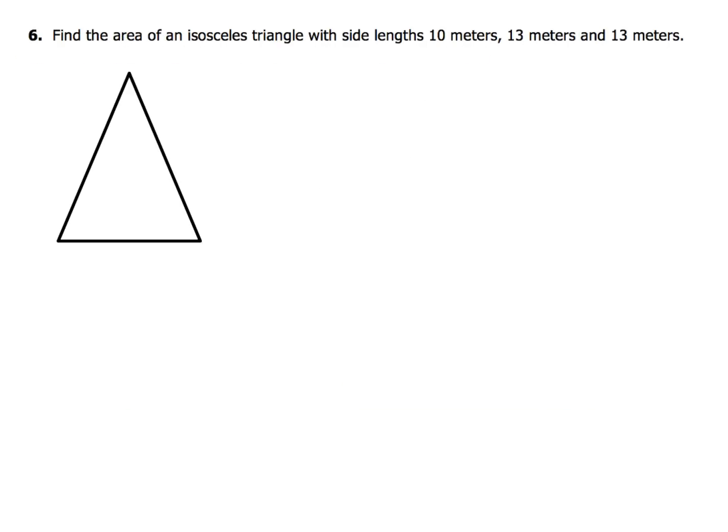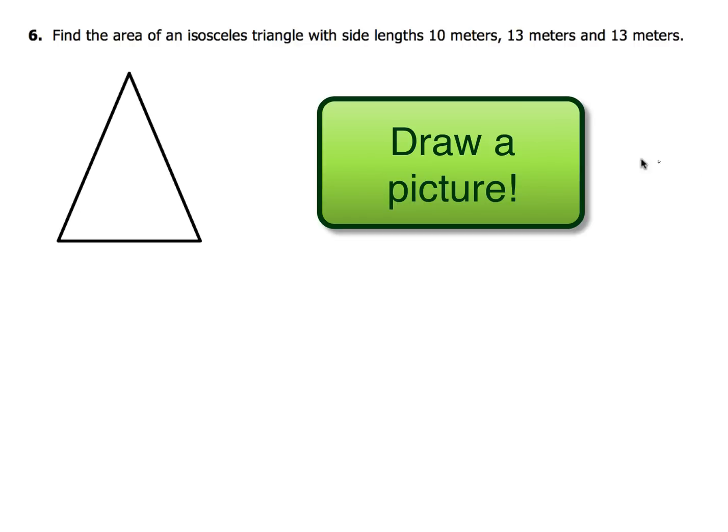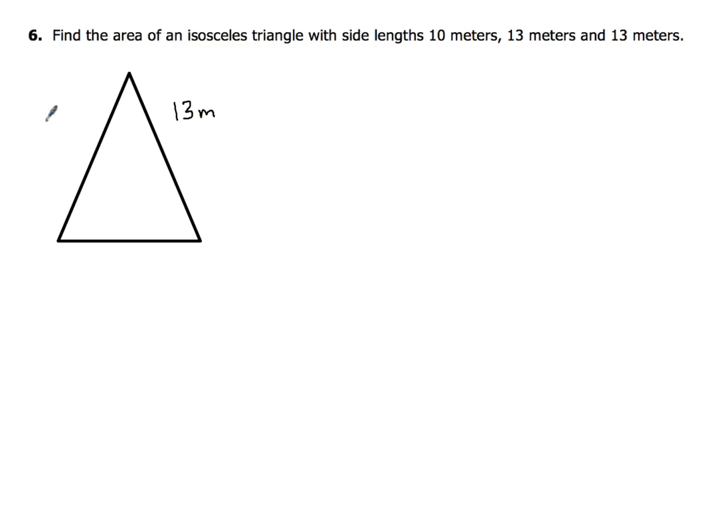Now in six, it says find the area of an isosceles triangle with side lengths 10, 13, and 13 meters. So here we go. We got to label this thing. So here we go. This side is going to be 13 meters. This side will be 13 meters. Now the base is going to have a length of 10 meters.